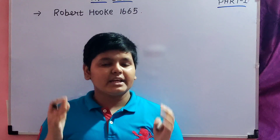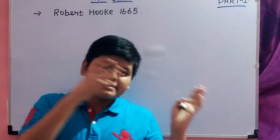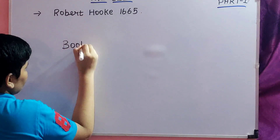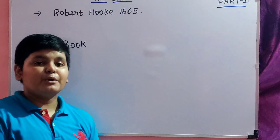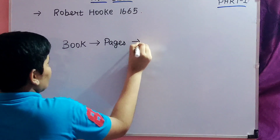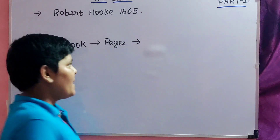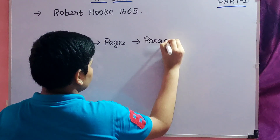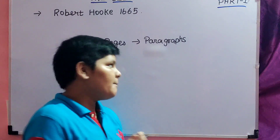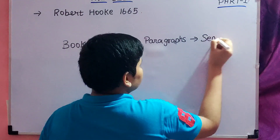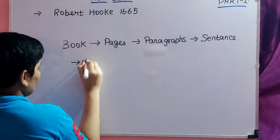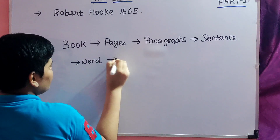If you take an organism — for example, a human being — you can compare it to a book. Books are made up of pages. Pages are made up of paragraphs. Paragraphs are made up of sentences. Sentences are made up of words. And words are made up of letters.